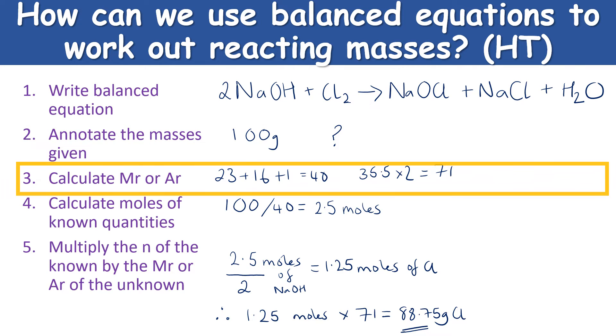And then step three: calculate the relative formula mass or the relative atomic mass, depending on whether it's a molecule or an atom, of the masses that you have been given or the mass that you need to find out. So the relative formula mass of sodium hydroxide is 40, as you can see on the screen, and the relative formula mass of chlorine is 71.